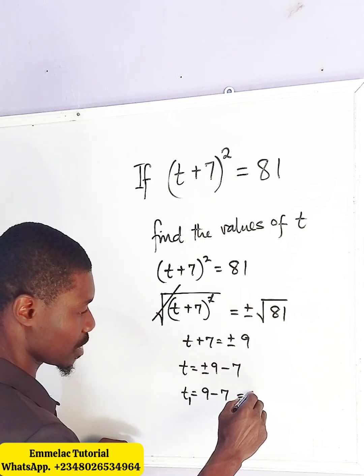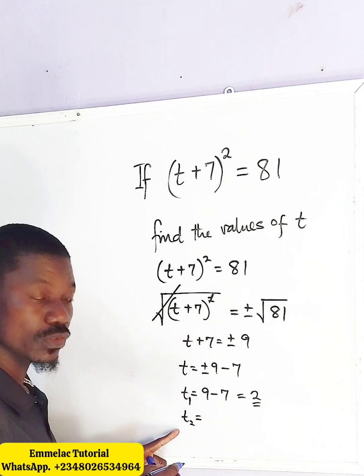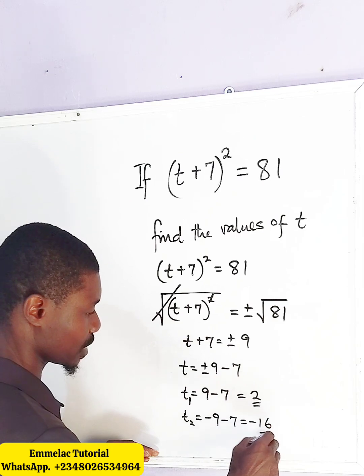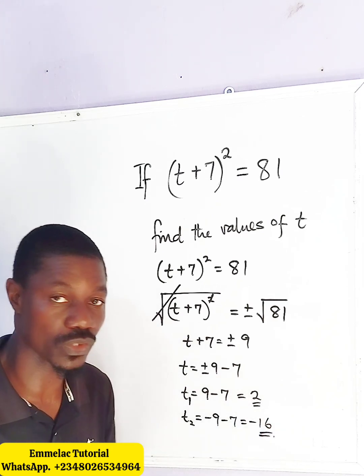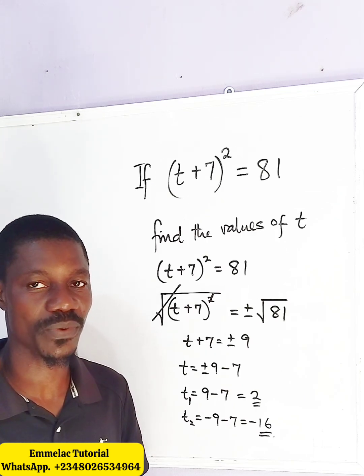And for the second solution of t, we have negative 9 take away 7, which will give us negative 16. So these are the two solutions for the value of t. Thank you and God bless you.